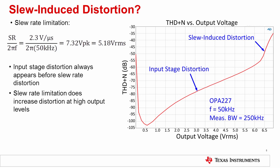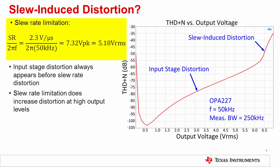Here is an example of measured distortion data for the OPA227. THD plus N is plotted on the y-axis versus the RMS output voltage on the x-axis. This measurement was made with a 50 kilohertz input signal and a 250 kilohertz measurement bandwidth, so the second through fifth harmonics of the fundamental signal will be inside the measurement bandwidth. For a 50 kilohertz signal, the slew-rate limitation is calculated by dividing the slew rate by 2 pi times the frequency. For the OPA227, the slew rate of 2.3 volts per microsecond divided by 2 pi times 50 kilohertz gives us about 7.32 volts peak, or 5.18 volts RMS. Comparing that to the measured results, we notice that above about 1 volt RMS, the distortion of the OPA227 is increasing dramatically, which is well below the calculated slew-rate limitation.